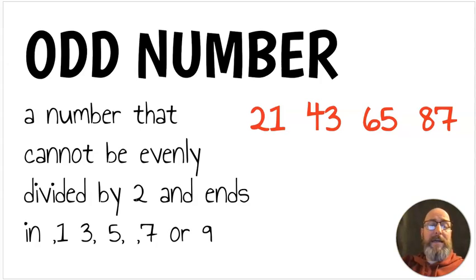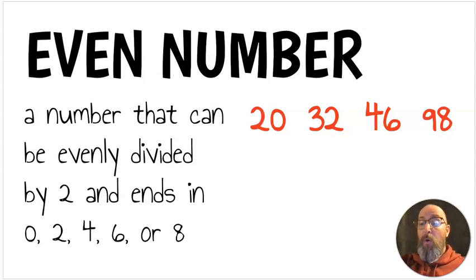Next is odd numbers. An odd number is a number that cannot be evenly divided by 2 and ends in 1, 3, 5, 7, or 9. In our class, we look at the number in the ones place, and if the number cannot be broken up evenly on a couple of hands, then we know it is an odd number. Next, we have even, or even number. An even number is a number that can be evenly divided by 2 and ends in 0, 2, 4, 6, or 8, because we know that all those numbers we can build equally on two hands.